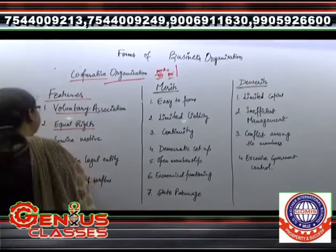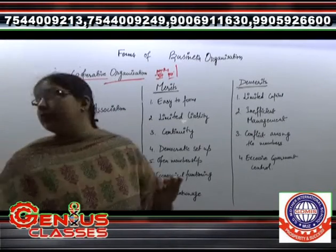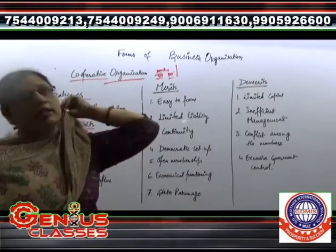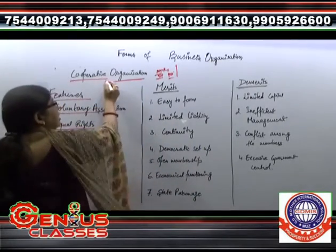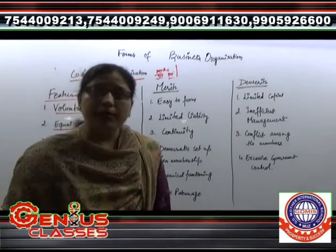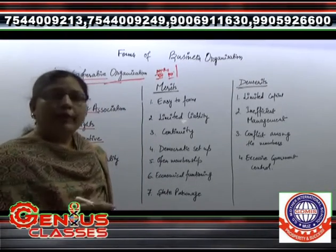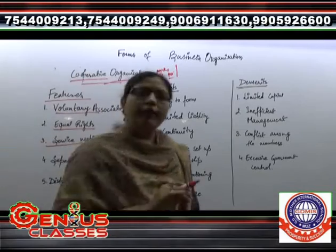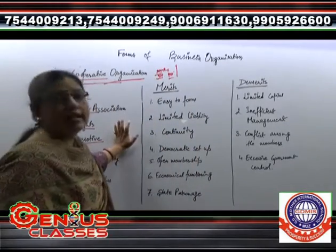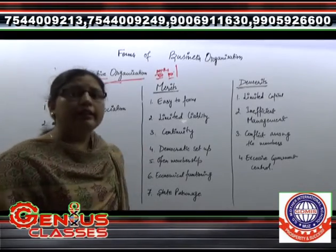Next feature is service motive. Service motive se matlab hai ki yahan pe jo cooperative organization ki formation ki gayi hai, ye organization ki formation service motive ke intention se huyi — profit motive ke intention se nahi. Profit motive is the second priority; first priority is to provide services to the group members and the outsiders.